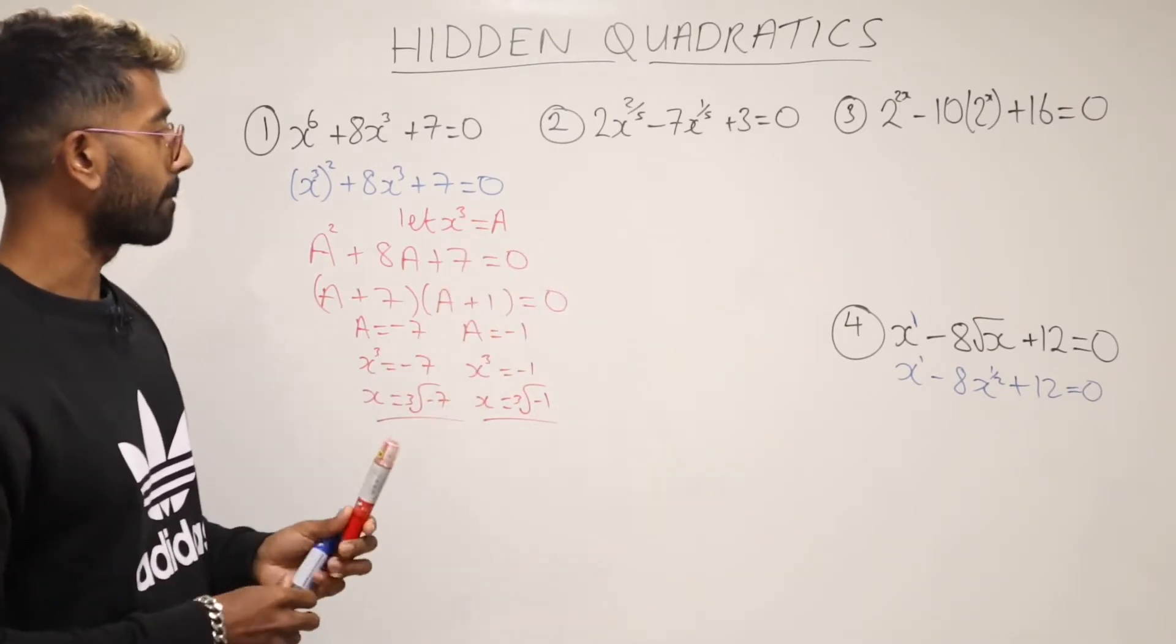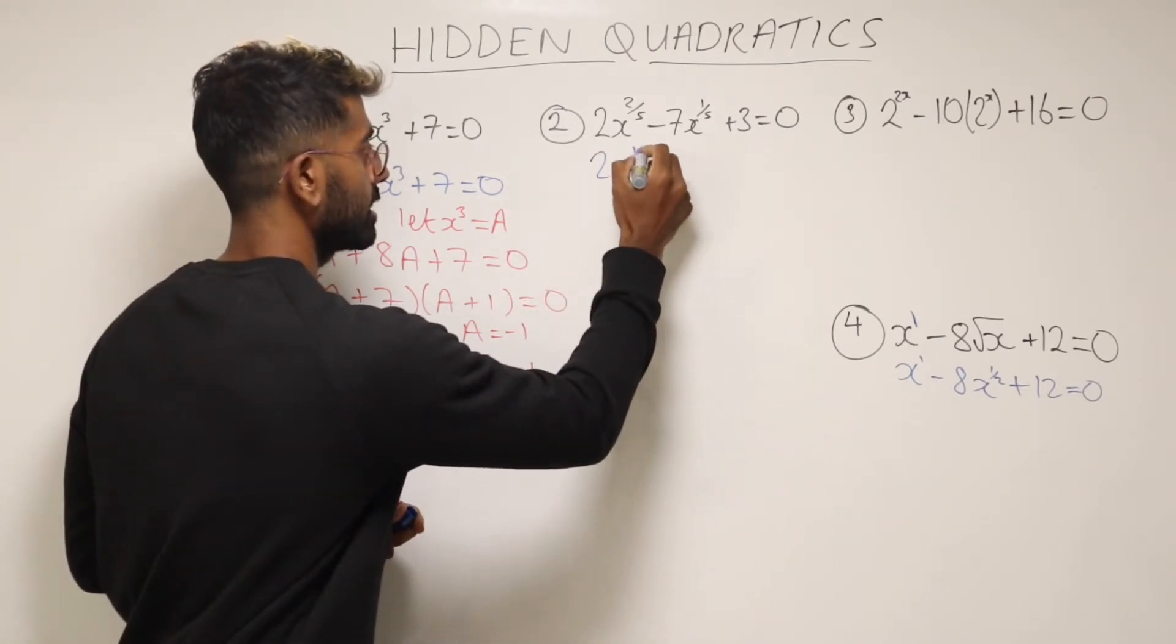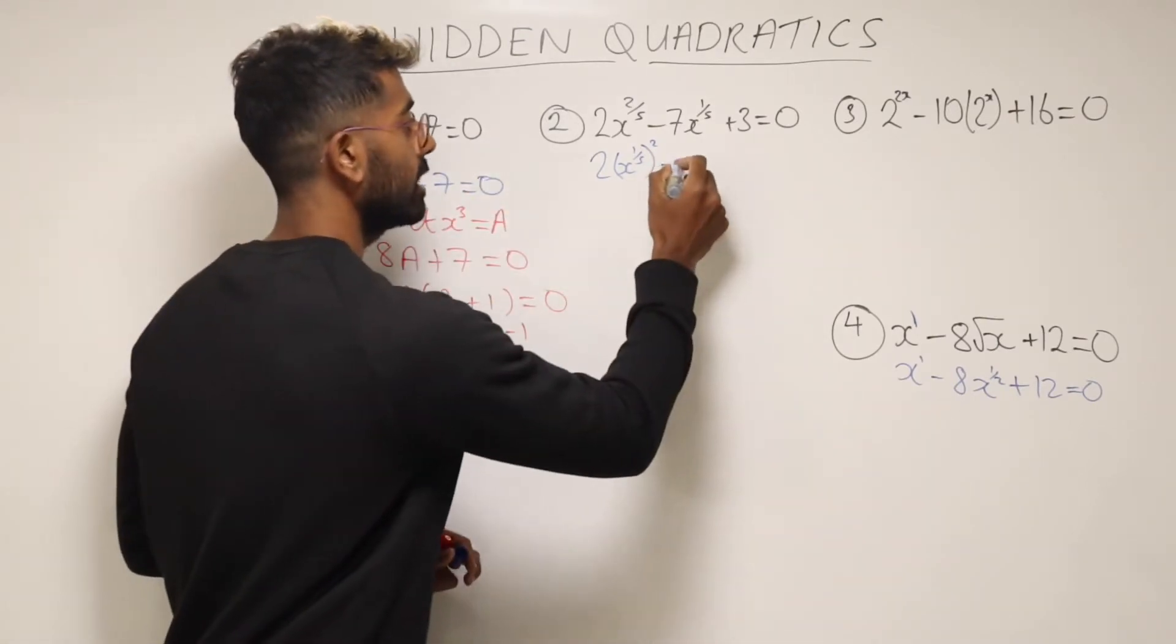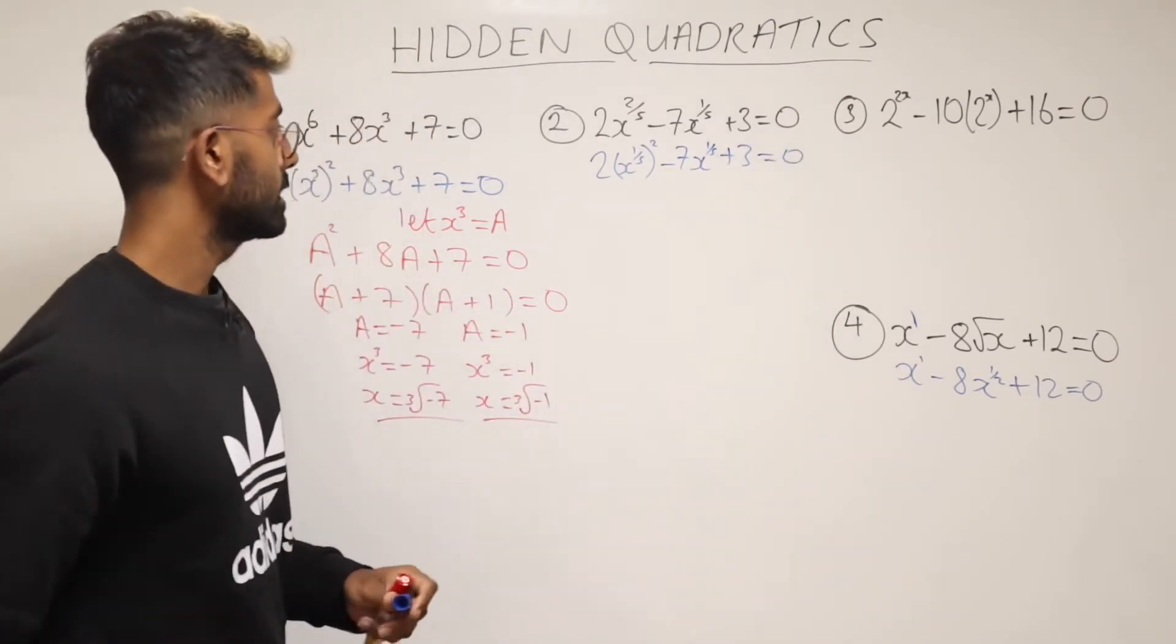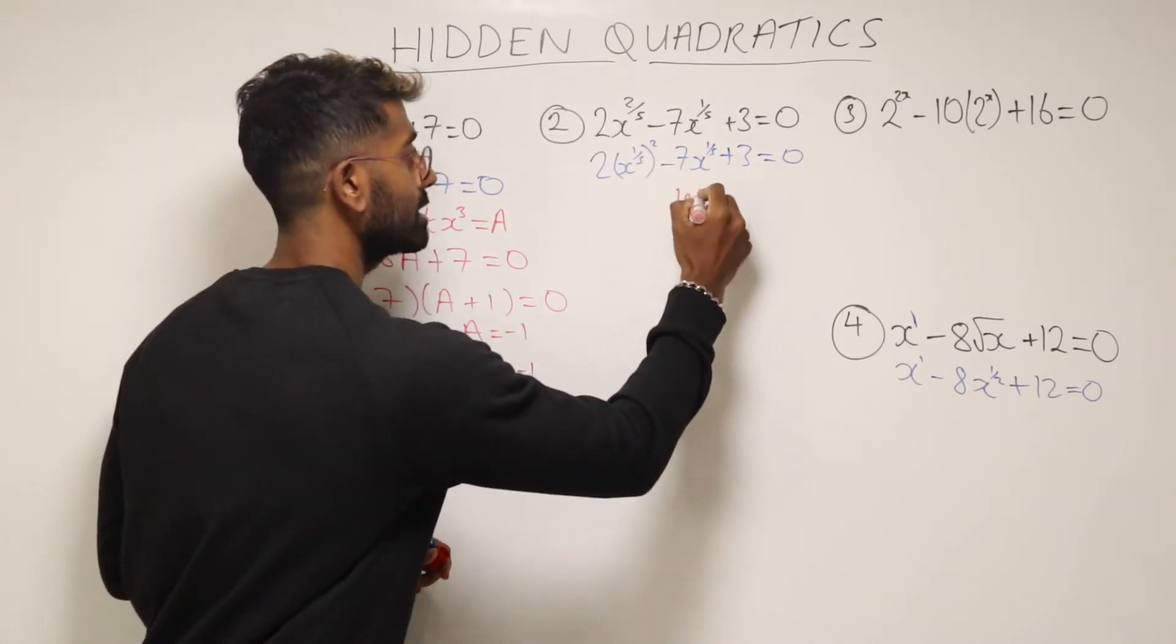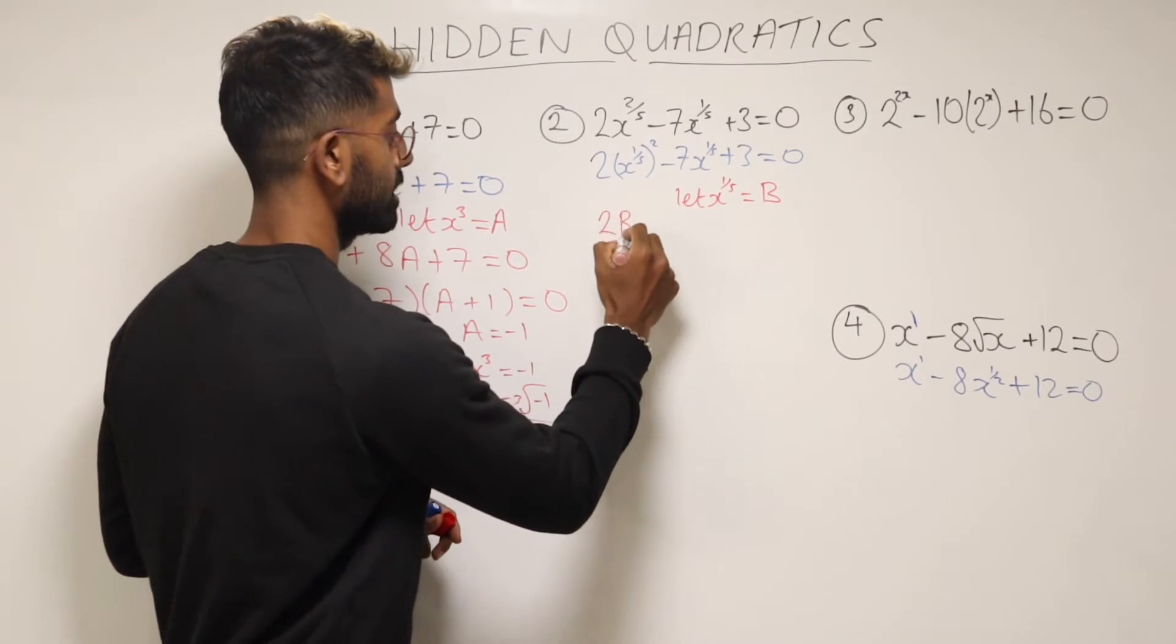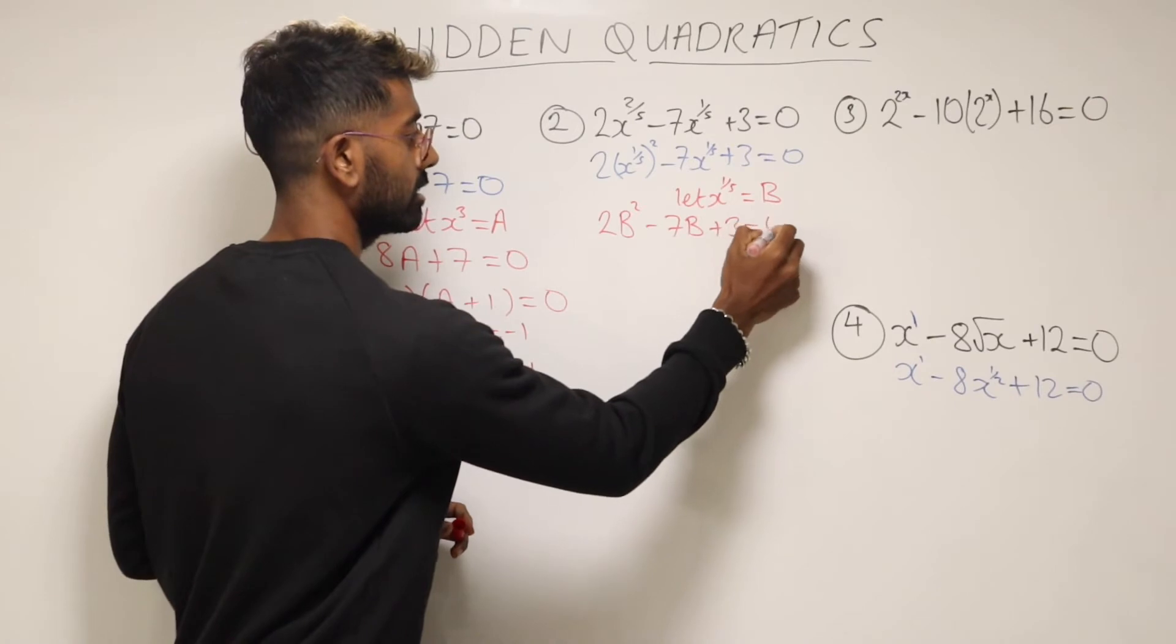Now we're going to do the same with the next one. So we need to start by changing this here into x to the power of one-fifth squared because 2 times one-fifth will give me two-fifths. So it's perfectly equivalent. And then minus 7x to the power of a fifth plus 3 equals 0. And now we'll go and choose another letter. So let's say we're going to let x to the power of one-fifth equal, we'll go with capital B this time. So this can be written as 2B squared minus 7B plus 3 equals 0.